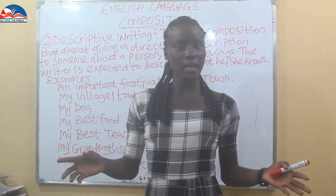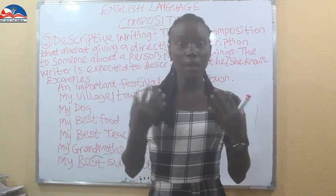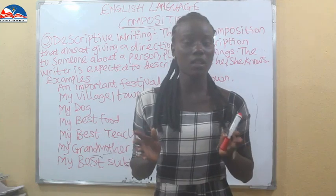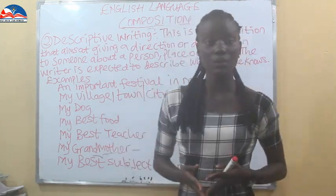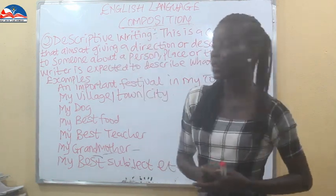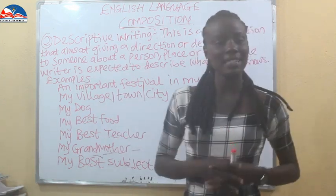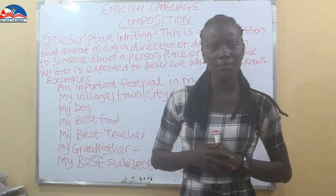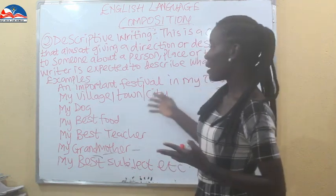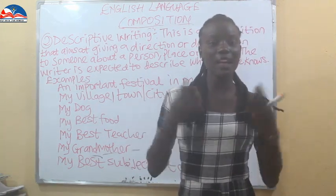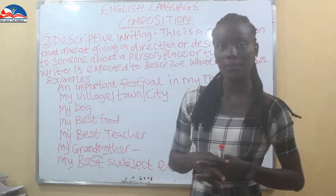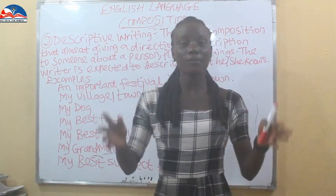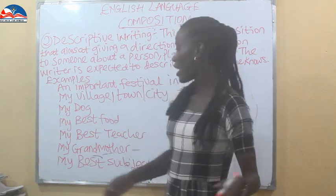For example, it could be 'My grandmother.' You could describe your grandmother to us — I might not know your grandmother, but the way you describe her to me, I will have a clear picture of that particular person, how the person would look like. Under descriptive writing, we have 'An important festival in my town.' I will describe the festival, the masquerade, and everyone who participated, so someone else can have a clear picture of how the festival looked.